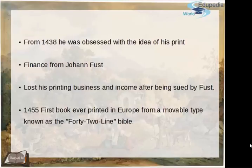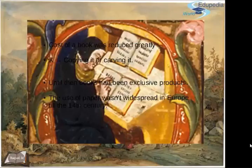The people who ended up keeping Gutenberg's printing business were Fust and Gutenberg's son-in-law — family problems, always happens. That said, it wasn't until he was in the middle of the trial that he finally achieved, in 1455, the first book ever printed in Europe with movable type. This is known today as the 42-line Bible, exclusive to Gutenberg.